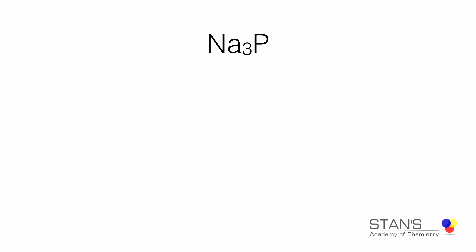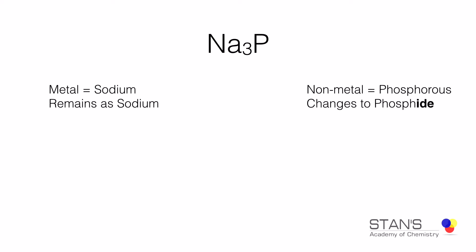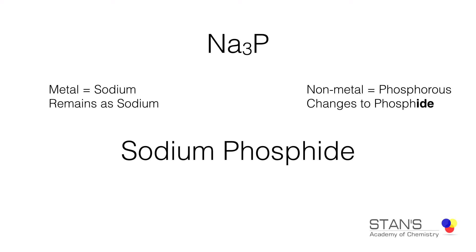In this example, we have sodium combining with phosphorous to form an ionic compound. There are three sodiums, therefore the name remains sodium for the positive part. For the non-metal, the name of phosphorous changes into phosphide, because if it is an element which is a non-metal, the name always changes to IDE — phosphide. So the compound is called sodium phosphide.